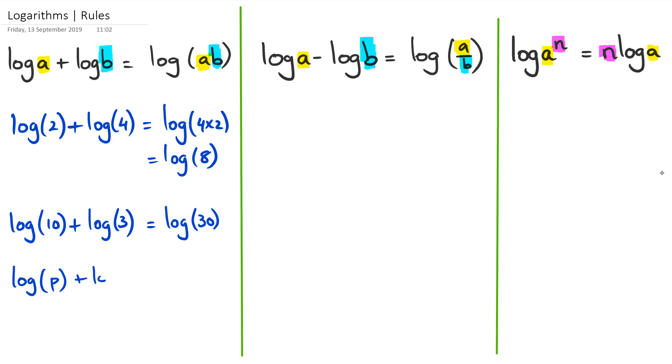And if you have letters, if you have something like log of P plus log of... actually I shouldn't use P because I'm going to show you that later on. But let's say log of P plus log of Q, then this just becomes log of P multiplied by Q.